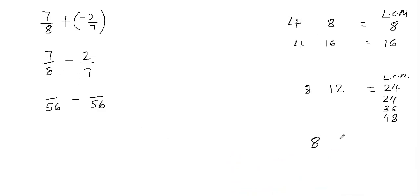Those are three scenarios to remember. For 8 and 7: the greater number 8 is not a multiple of 7, and they are not divisible by the same number — they have no relation. In this situation, just multiply the numbers. The least common multiple of 8 and 7 is 56. That's why, looking at the denominators, I said right away that the least common multiple of 8 and 7 is 56.